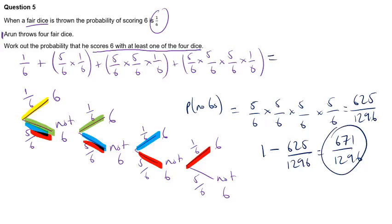And that gives us 671 over 1296, and that's the answer. Same answer you'll get if you did it this way. Like I say, this method's great, but there's some more calculating. I think this one's quite a nice shortcut.